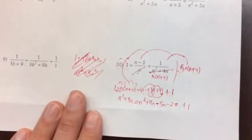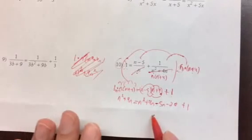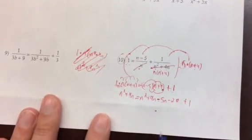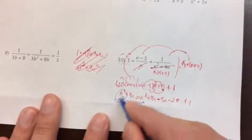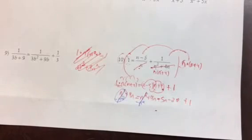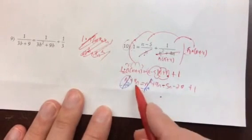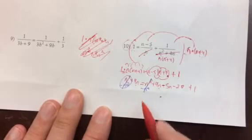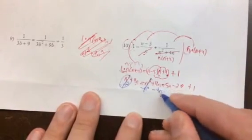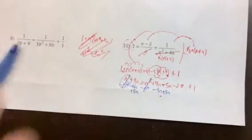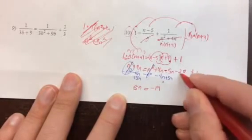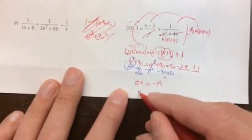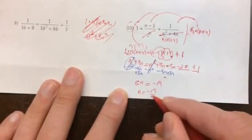The 1 is still there. This looks like a quadratic, so we need to make it equal to 0. But I notice that when I subtract n squared from both sides, the n squareds cancel — so it's actually linear. I need to get all variables on one side and constants on the other. Subtracting 4n and adding 5n, we end up with 5n equals negative 19 by combining terms. So n is negative 19 fifths.